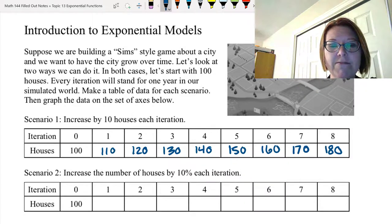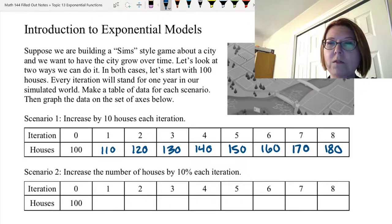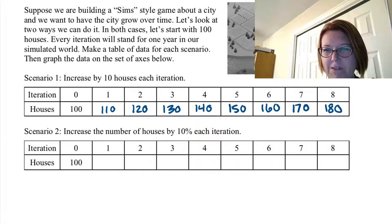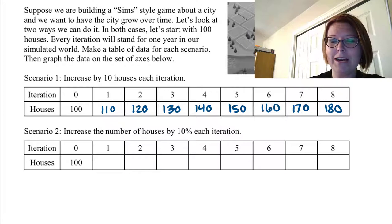To get this first column of the table, let me just describe the table so we can fill it out as we go. The top row is the iterations 0 through 8. The bottom row is the number of houses which starts at 100.